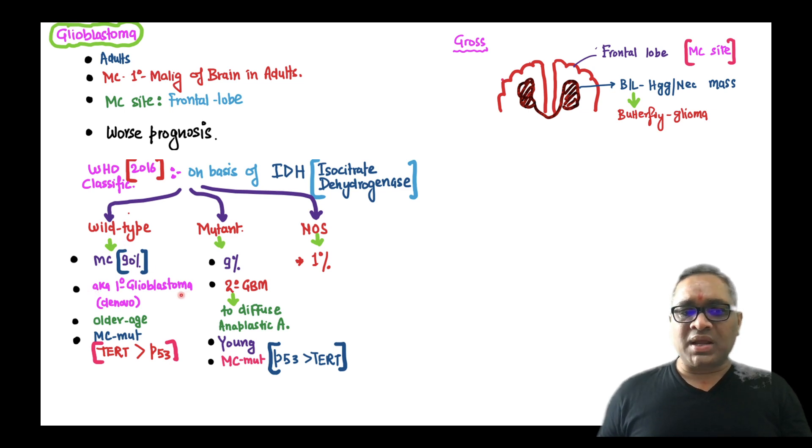They are also known as primary glioblastoma because they are arising from normal brain tissue. They are not secondary to any other tumor, that is why it is de novo. They will be seen in older patients and their most common mutation will be telomerase reverse transcriptase, which is also called TERT. TERT mutation is more common than P53 in wild type which is the most common type.